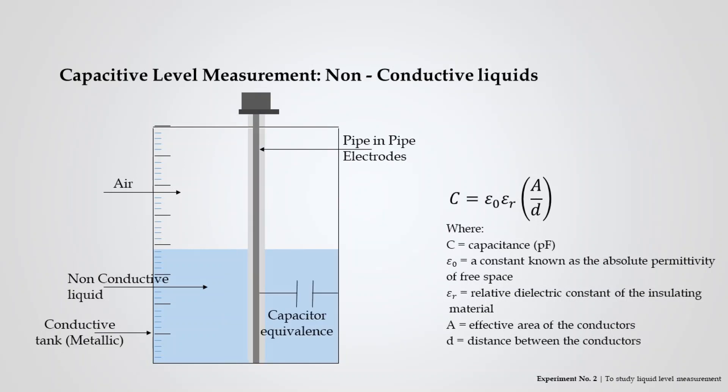The level measurement setup of non-conductive liquids consists of a conductive tank usually metallic in nature. A metal electrode is placed inside the tank. The liquid used for measurement should be strictly non-conductive in nature. The metal electrode and the metallic wall of the tank act as two plates of a capacitor with air and water acting as a dielectric material separating them. The capacitance developed across these two electrodes is represented by the equation shown below. This capacitance is directly proportional to the liquid level in the tank.